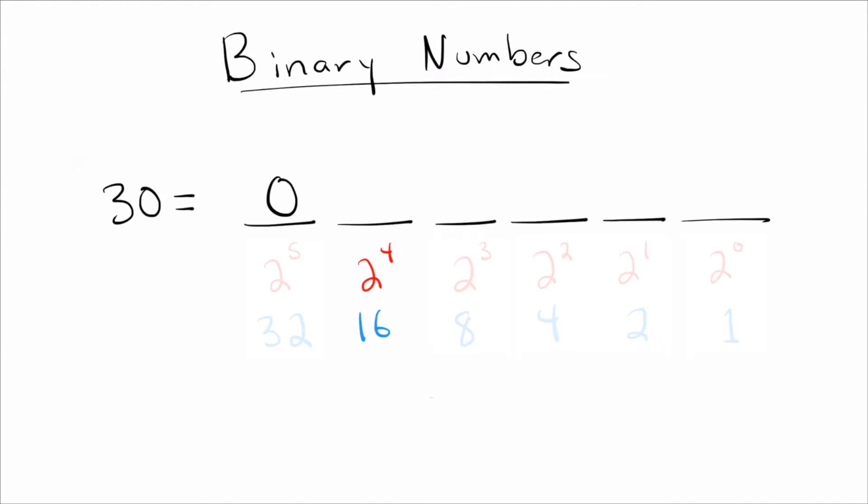Okay, well, let's go to the next one. 16. How many 16s are there in 30? Well, there is a 16 in 30. So if I take 30 and I subtract 16, now I'm left with 14.